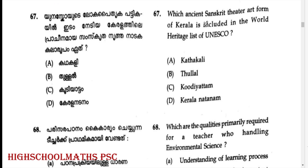Which ancient Sanskrit theatre art form of Kerala is included in the world heritage list of UNESCO? Answer: Option C — Koodiyattam. Koodiyattam is the ancient Sanskrit theatre art form of Kerala included in UNESCO's world heritage list.